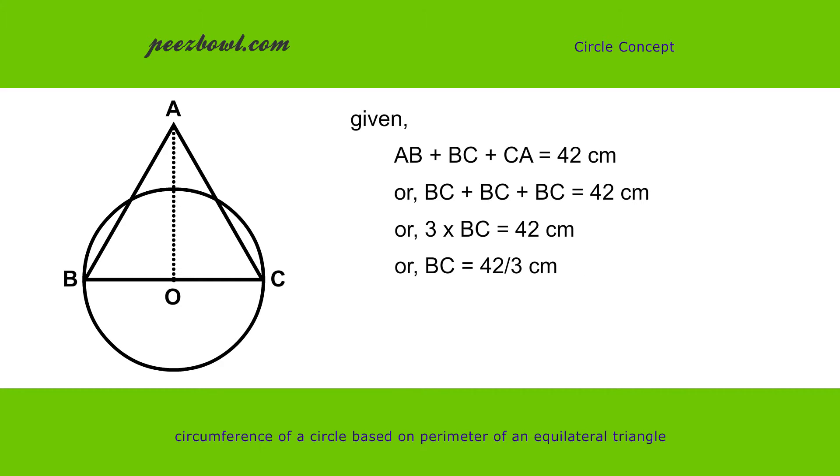BC equals 42 divided by 3 equals 14 cm. Hence, diameter of the circle is 14 cm.